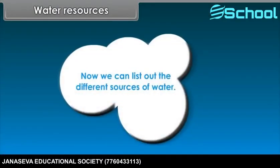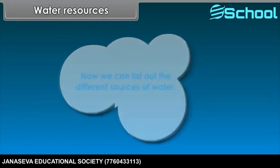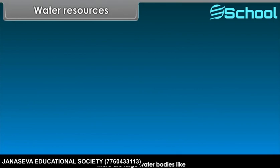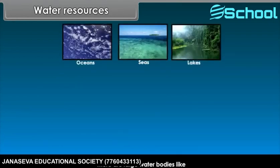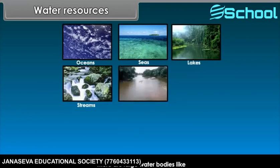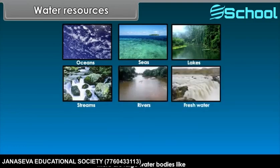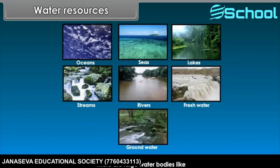Now we can list out the different sources of water. There are large water bodies like oceans, seas, lakes, streams, rivers, freshwater, groundwater, etc. These are the different sources of water on Earth.